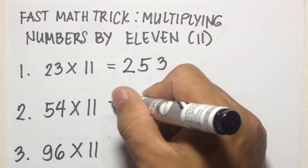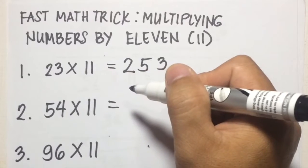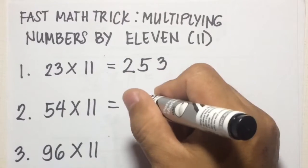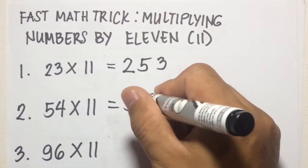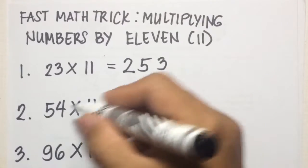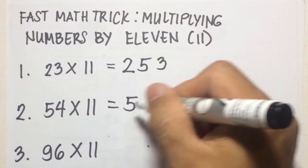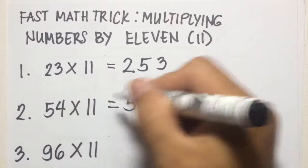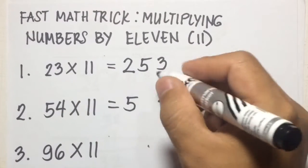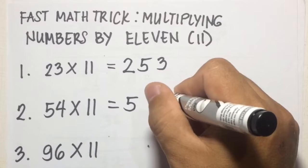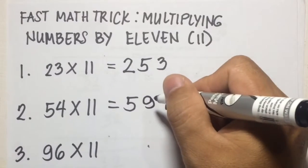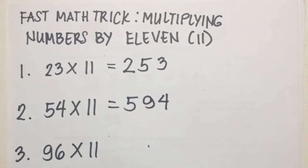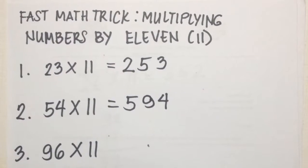Number 2: 54 times 11. The first digit is 5, the last digit is 4, and the middle digit is 5 plus 4 — the sum of the two — that will be 9. So 54 times 11 is 594.